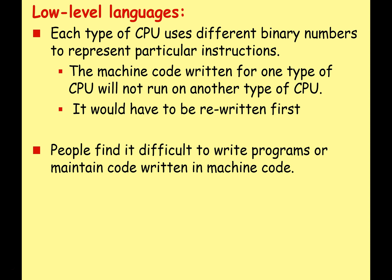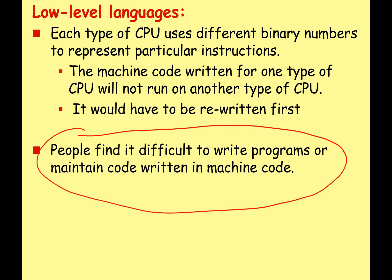Each type of CPU uses different binary numbers to represent particular instructions. So the opcode for one family of CPUs will be different from the opcode for the same instruction in another family of CPUs. This means machine code written for one type of CPU will not run on another — it would have to be rewritten. For example, machine code written for the Intel platform can't run on an ARM processor. Key point: people find it difficult to write programs or maintain code written in machine code.